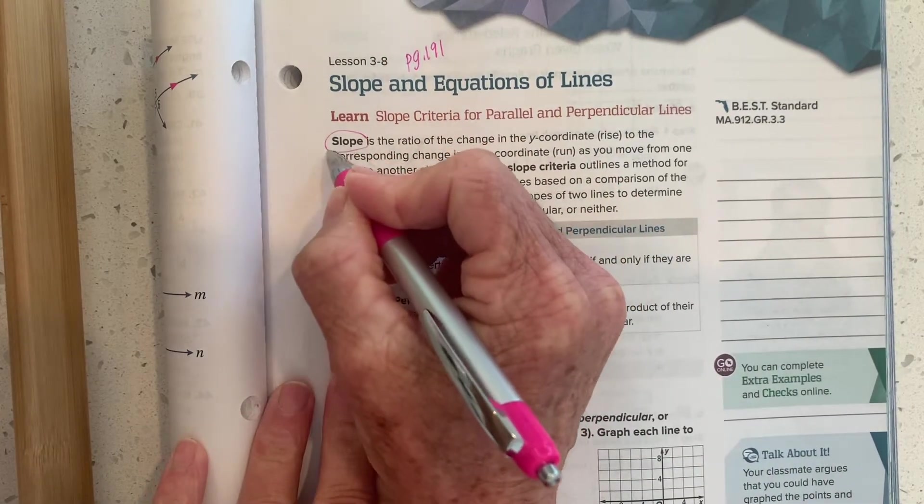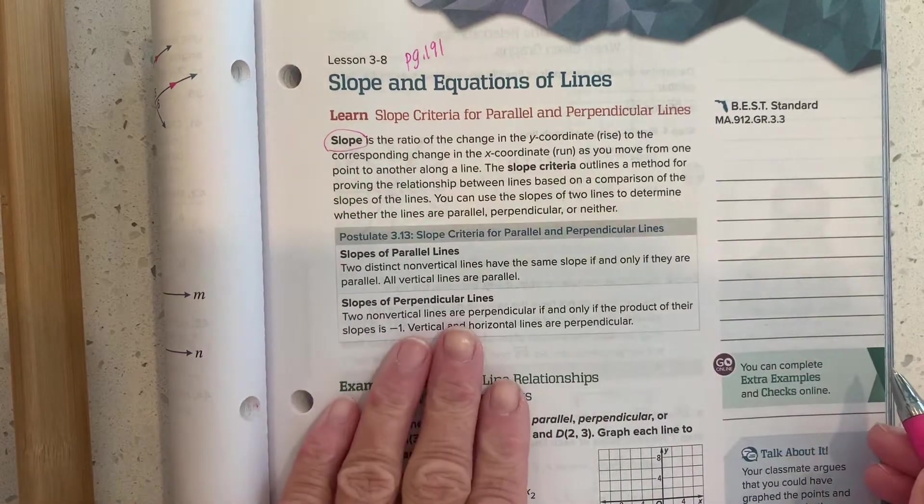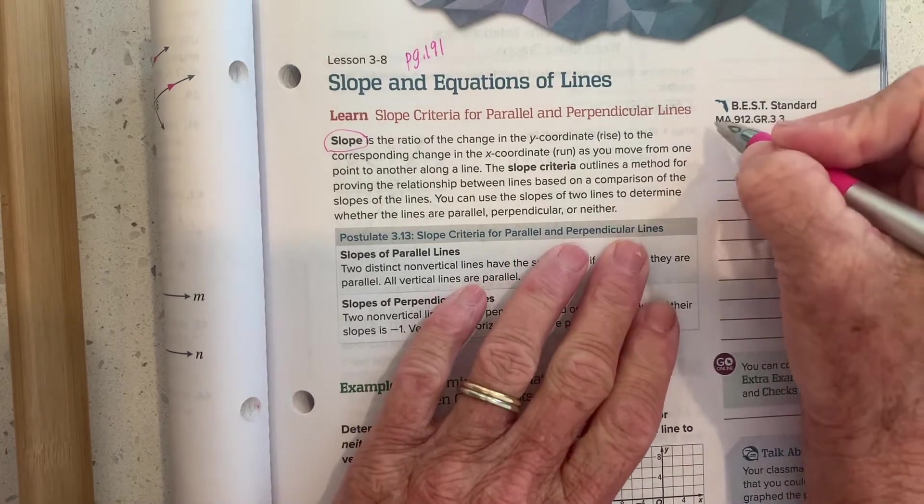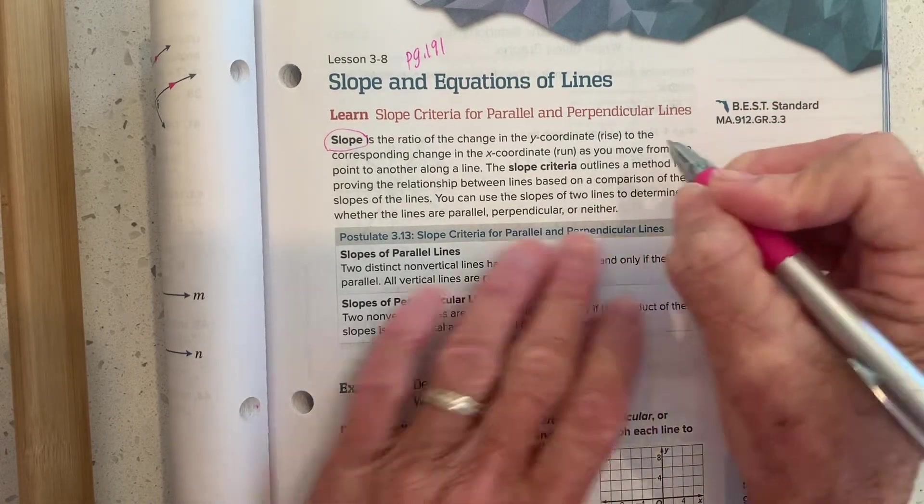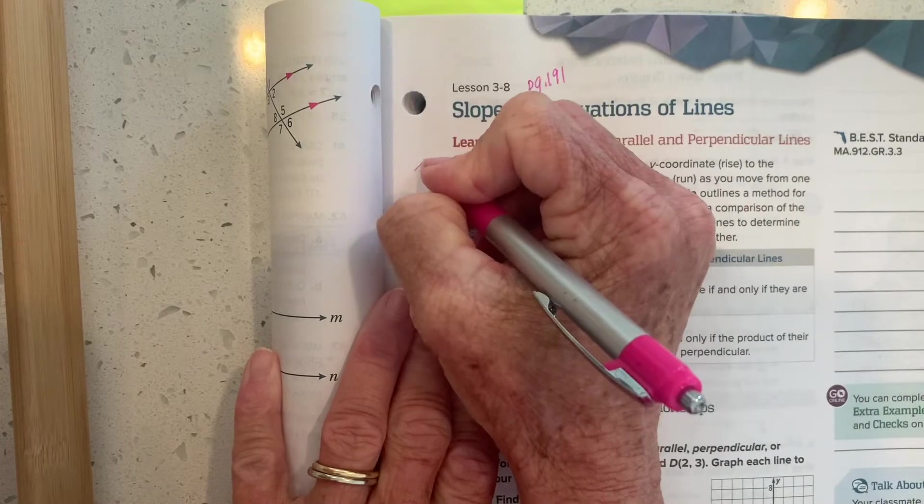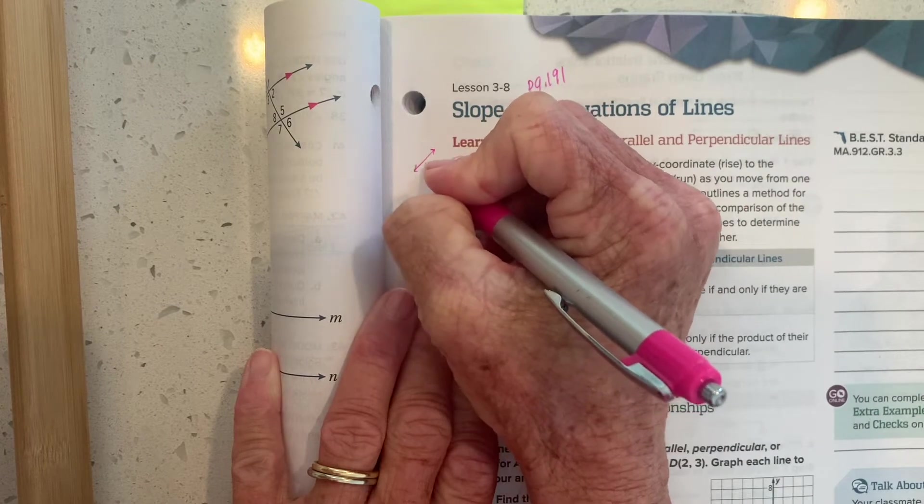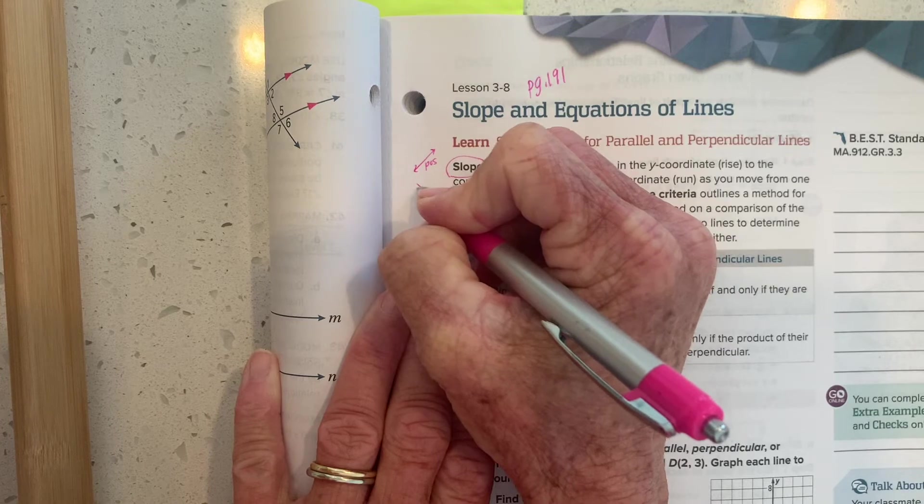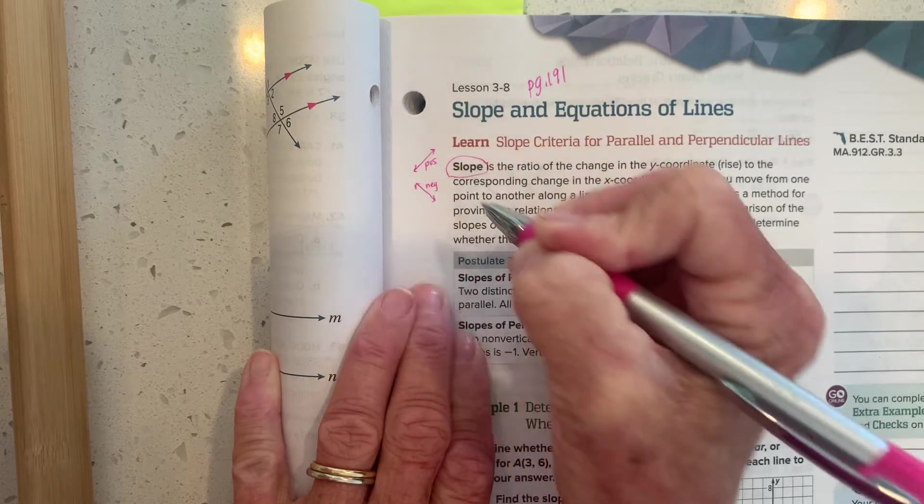So first of all, just a really quick review of slope from algebra. So remember, a line can run four different ways. If it leans to the right, it's going to have a positive slope. If it leans to the left, it has a negative slope.